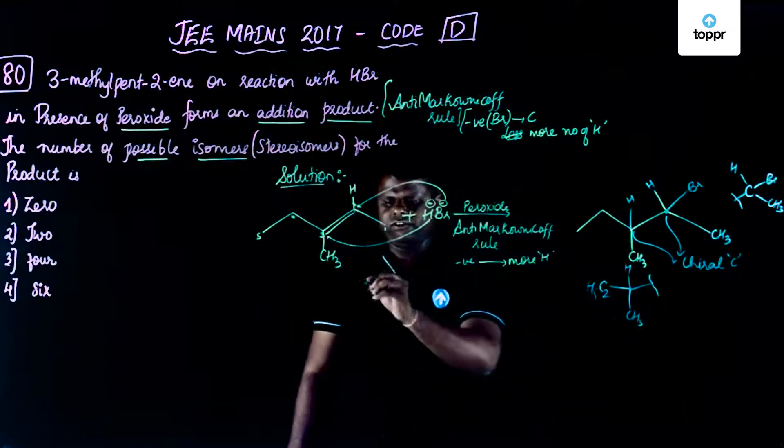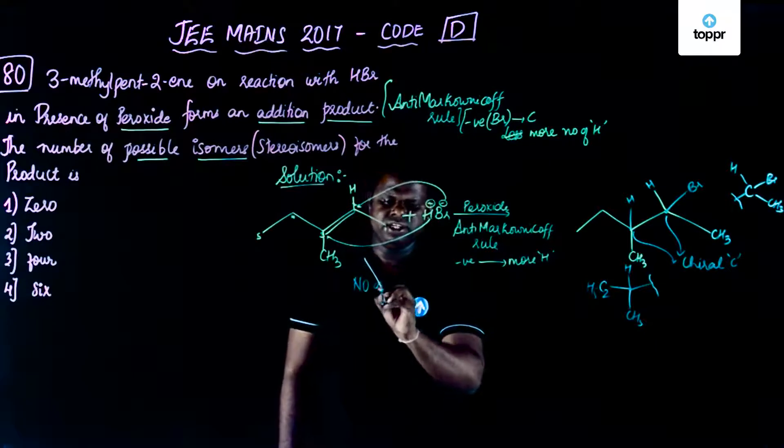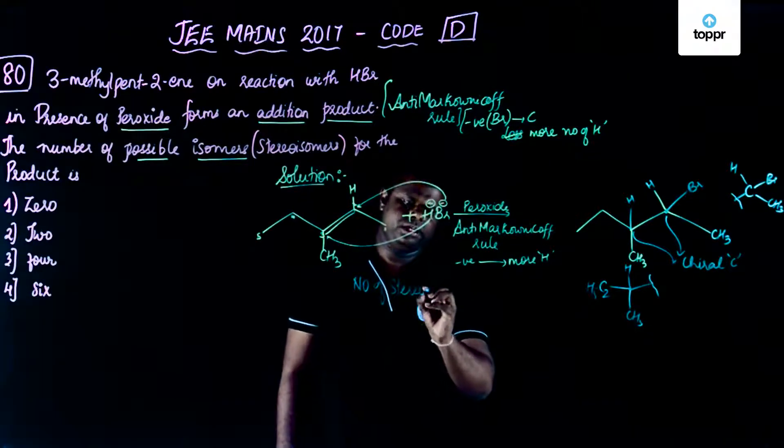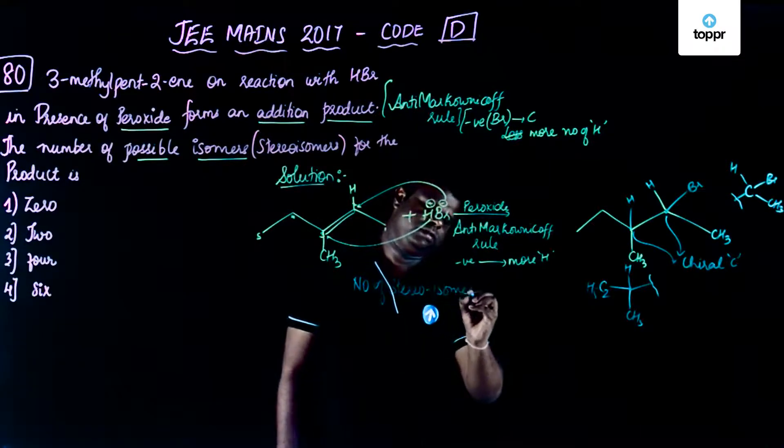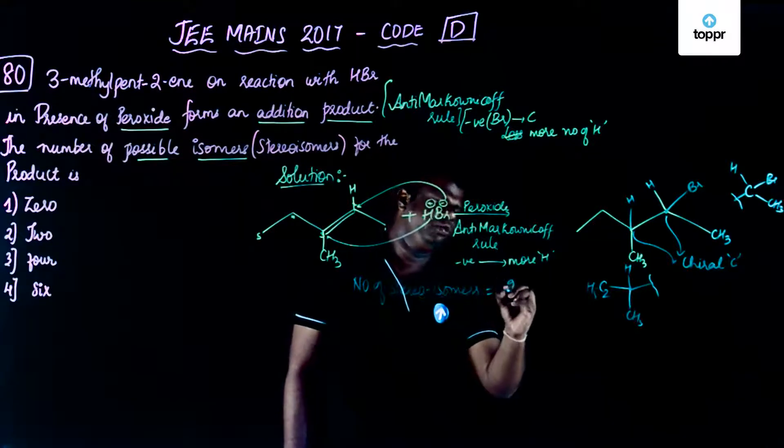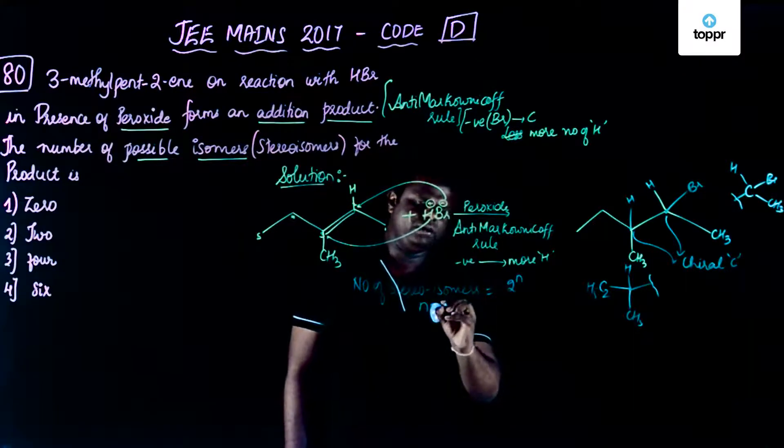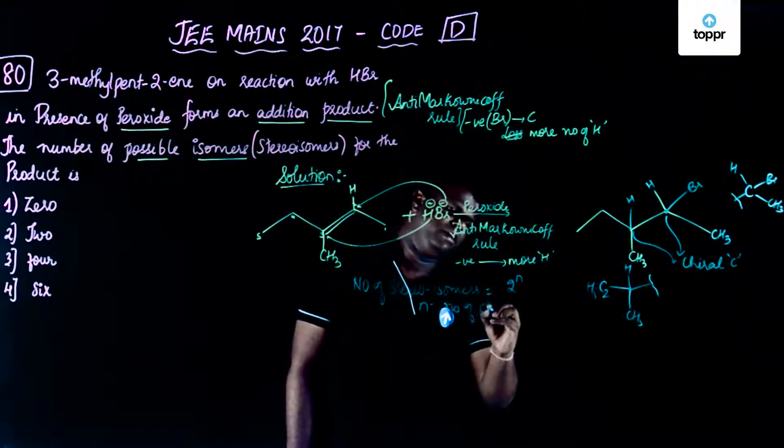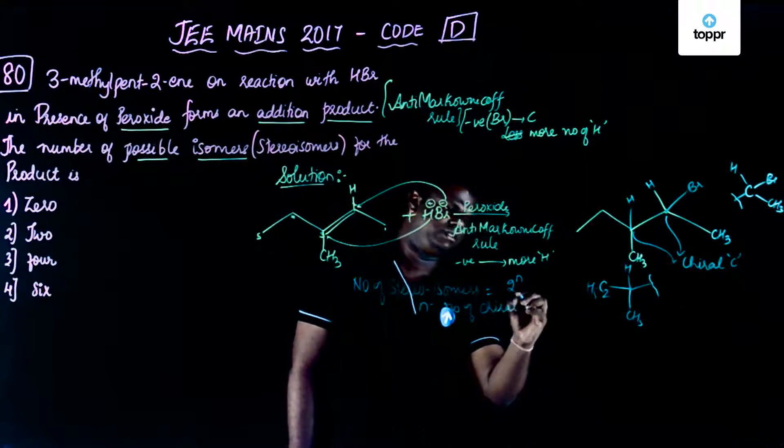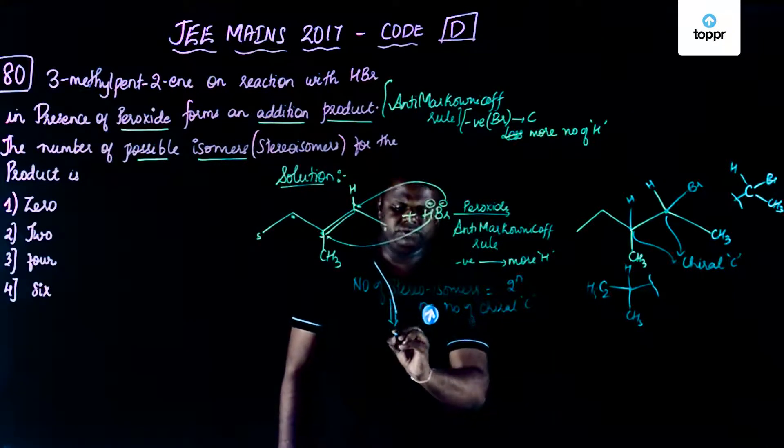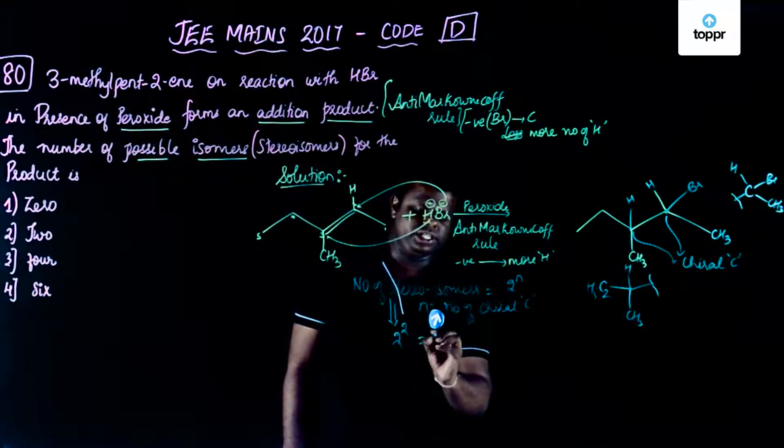So we already have the formula, number of stereoisomers are given by 2 raise to n where n is equal to number of chiral center or chiral carbons. So number of stereoisomers would be 2 raise to 2 which is equal to 4.